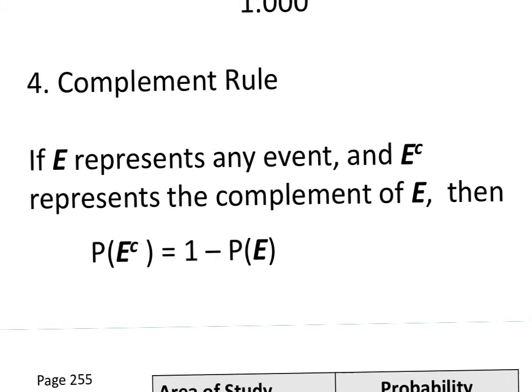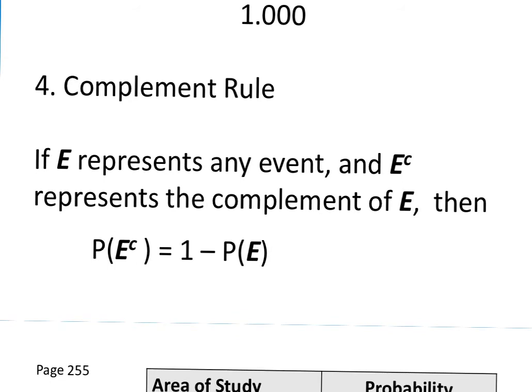And that leads us to the complement rule. If E represents any event, and the complement of E represents the complement of E, then the probability of the complement of E occurring is equal to 1 minus the probability of E. You could also rewrite that in exactly the opposite fashion. You could write the probability of E equals 1 minus the probability of the complement of E.